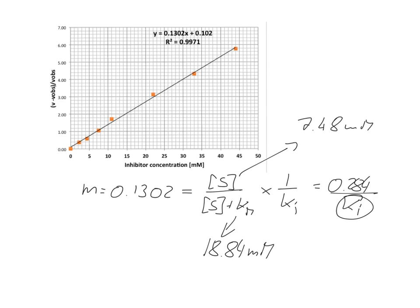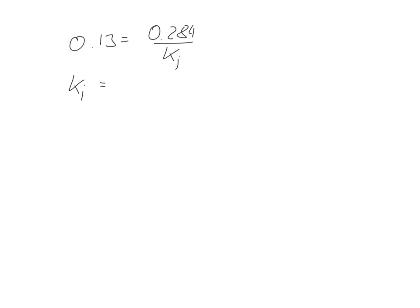If we do this calculation — S divided by (S plus KM) — we get 0.284 divided by Ki. So all we need to do is solve for Ki. Please note that this expression doesn't have a unit because the units cancel each other out, which is why we can use OD per minute. So Ki equals 0.284 divided by 0.13, which gives us 2.18 millimolar. That is our Ki.